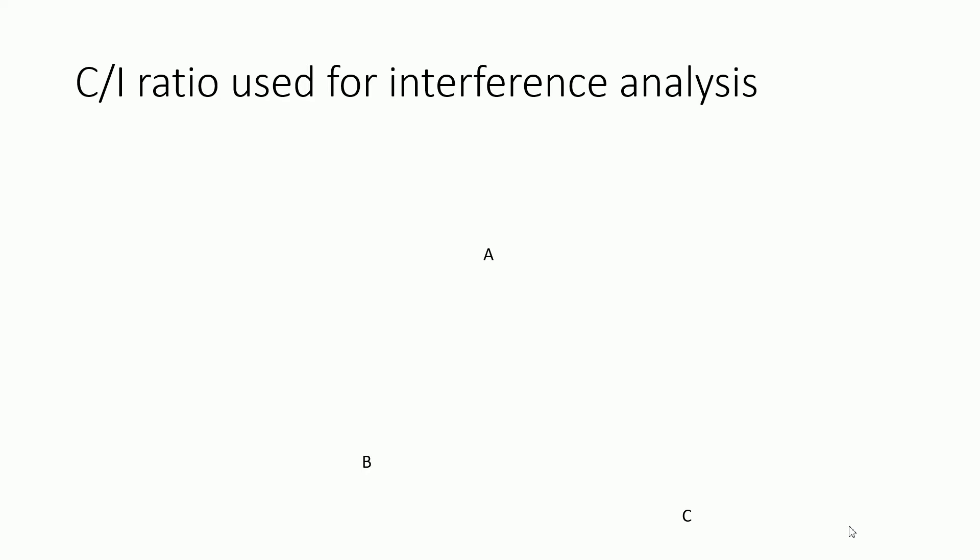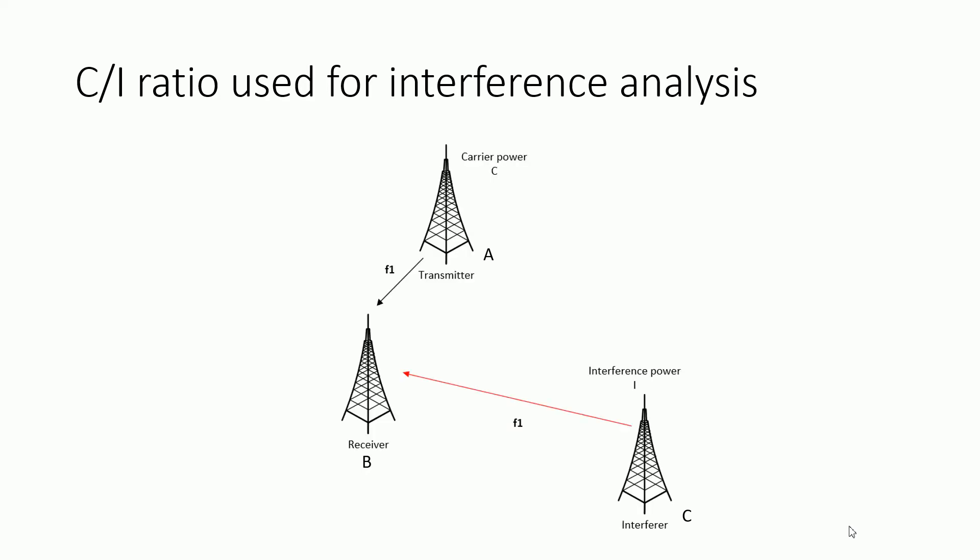To analyze interference, we have here three stations — A, B, and C — and B is our receiver. We are trying to see what happens when station B receives the same frequency from station A and C. The analysis is based on a ratio called the C/I ratio, which is used when doing interference analysis on the links. You should calculate this ratio for each link.